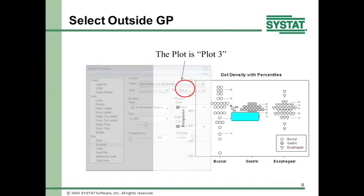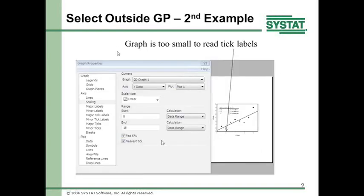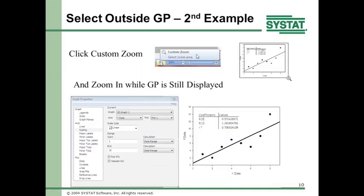Here's a second example. The graph was tiny and I wanted to change the tick labels but couldn't see them well. So I went outside the graph properties panel. In the lower right-hand corner of the window there's a custom zoom button. I clicked on custom zoom, surrounded the graph with the cursor, let go, and now it's magnified — all done outside the graph properties panel. I can then go back inside and change properties.